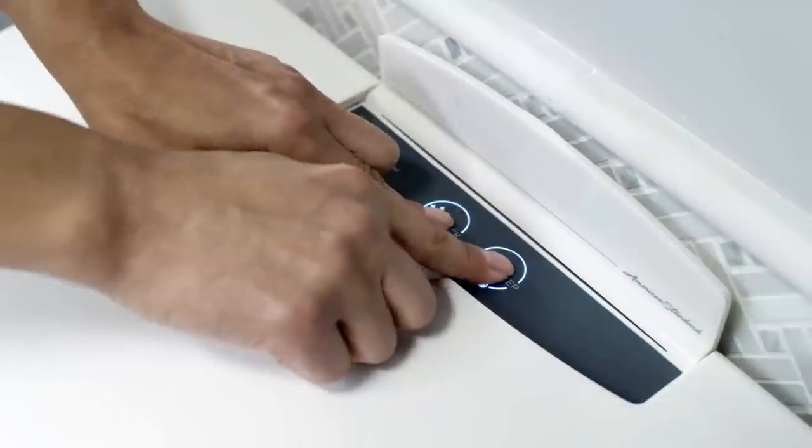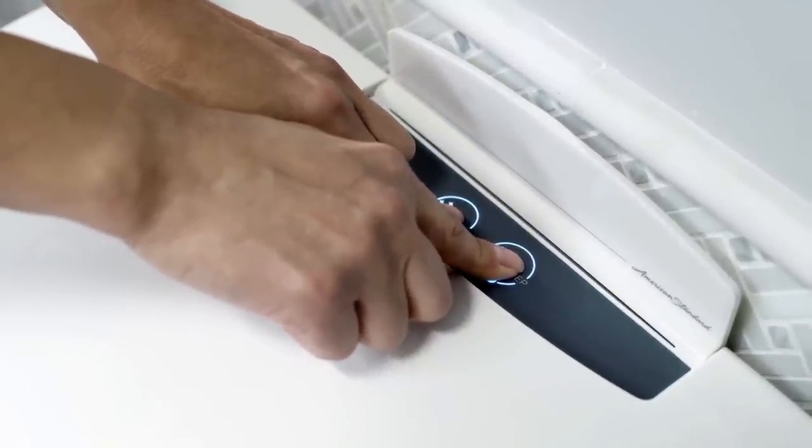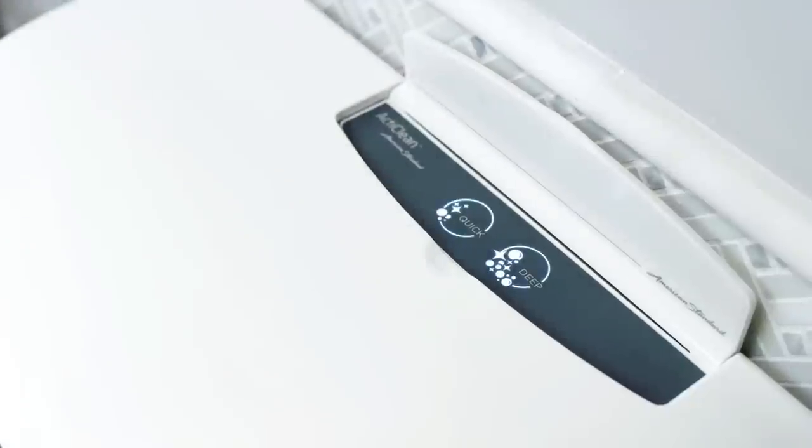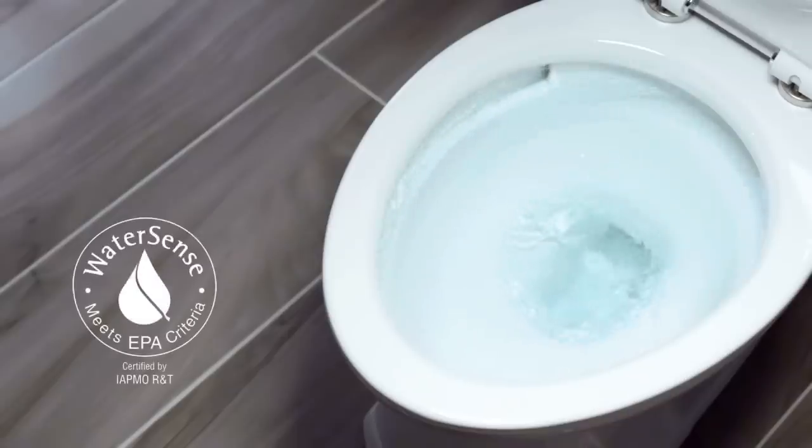Simply press and hold both quick and deep buttons for three seconds to turn the child lock on, and do the same to turn the child lock off. The toilet is WaterSense certified, using only 1.28 gallons or 4.8 liters with every flush.